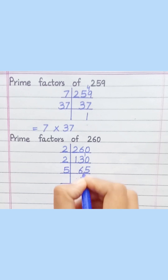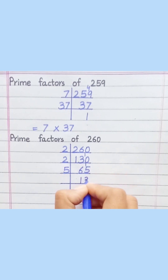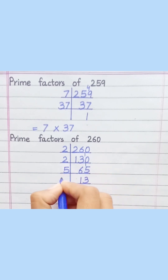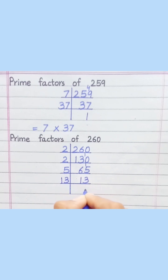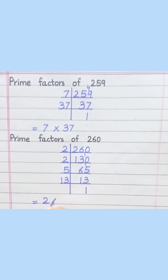5 ones are 5. 5 threes are 15. 13 ones are 13. Equal 2, multiply 2, multiply 5, multiply 13.